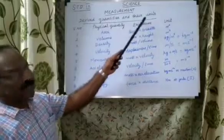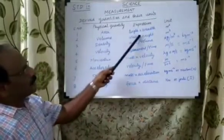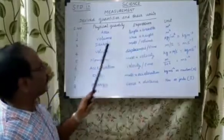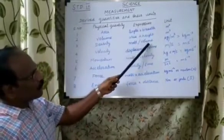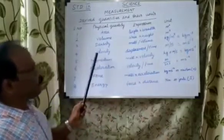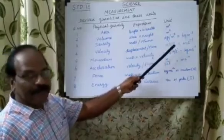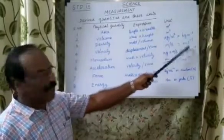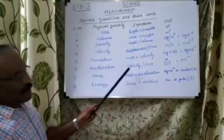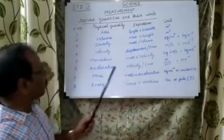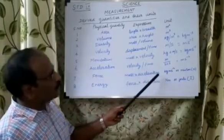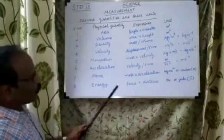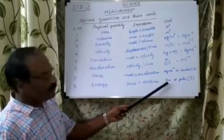Next: derived quantities and their units. Area equals length times breadth — unit is meter square. Volume equals area times height — unit is meter cube. Density equals mass divided by volume — unit is kilogram per meter cube. Velocity equals displacement divided by time — unit is meter per second. Momentum equals mass times velocity — unit is kilogram meter per second. Acceleration equals velocity divided by time — unit is meter per second square. Force equals mass times acceleration — unit is kilogram meter per second square, or newton (N). Energy equals force times distance — unit is newton meter, or joule (J).